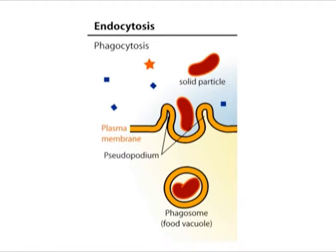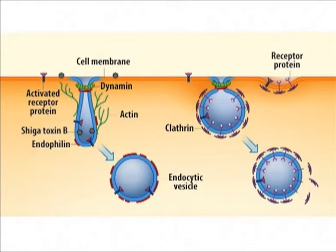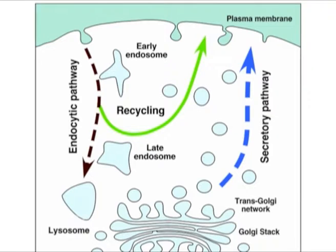One of the major functions of lysosomes is the digestion of material taken up from outside the cell by endocytosis. The role of lysosomes in the digestion of material taken up by endocytosis relates not only to the function of lysosomes, but also to their formation. In particular, lysosomes are formed by the fusion of transport vesicles budded from the trans-Golgi network with endosomes, which contain molecules taken up by endocytosis at the plasma membrane. The formation of lysosomes thus represents an intersection between the secretory pathway and the endocytosis pathway through which extracellular molecules are taken up at the cell surface.